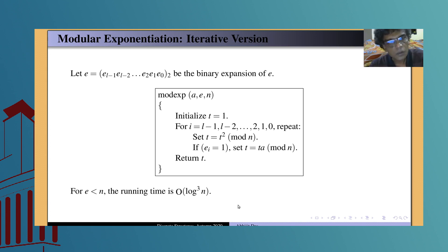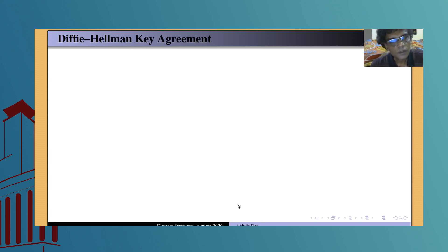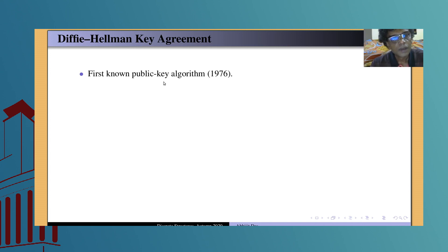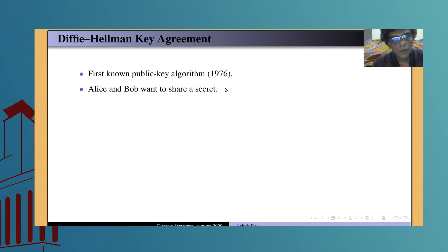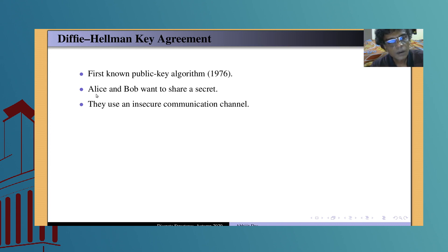With this basic introduction to modular arithmetic, we now switch to a couple of applications in cryptography. The first one is called the Diffie-Hellman Key Agreement, or Diffie-Hellman Key Exchange Protocol. This was the first public key cryptographic primitive, designed by Whitfield Diffie and Martin Hellman in 1976. The research was motivated by the problem of two parties, Alice and Bob, wanting to share a secret by communicating over an insecure or public channel where anybody can eavesdrop. The question is: can they still share a secret for future communications?